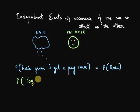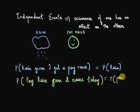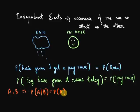Vice versa, the probability of getting a pay raise will not change, regardless of whether it rains outside or it's bright and sunny. So when I have two independent events A and B, the conditional probability of A given B will be the probability of A, and the conditional probability of B given A will be the probability of B.